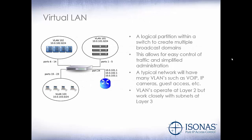Let's talk a little bit about virtual LANs, or VLANs. A VLAN is a logical partition within a switch to create multiple broadcast domains. This allows for easy control of traffic and simplified administration. If we have IP cameras, IP phones, workstations, clients, and mobile devices, we don't want all of these communicating on the same actual local area network — we want them segmented into VLANs. A typical network will have many VLANs such as VoIP, IP cameras, guest access, etc. — anything that we want to logically partition off that may be on the same physical switch.